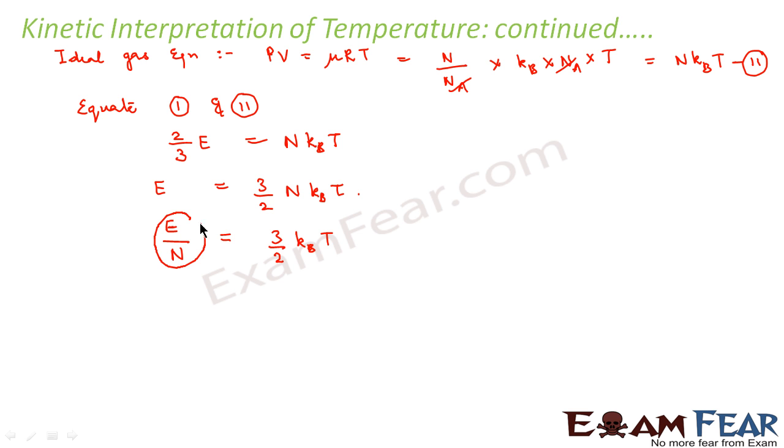E by N is the average kinetic energy. This is average kinetic energy. What is this? 3/2 times kB. This is a constant.